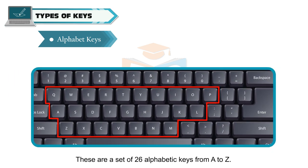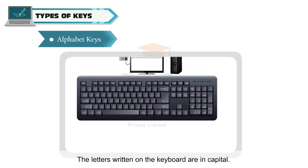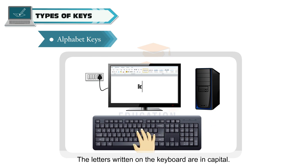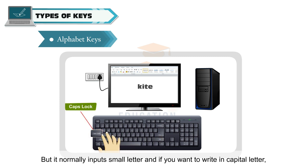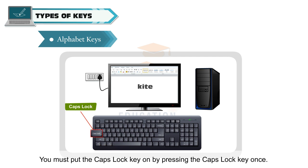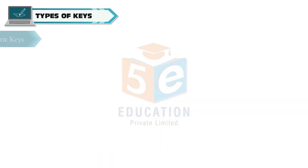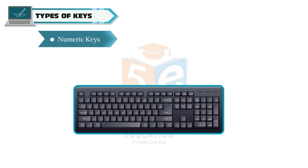There are a set of 26 alphabetic keys from A to Z. The letters written on the keyboard are in capital, but it normally inputs small letters. If you want to write in capital letters, you must put the caps lock key on by pressing the caps lock key once.